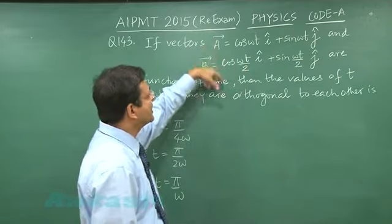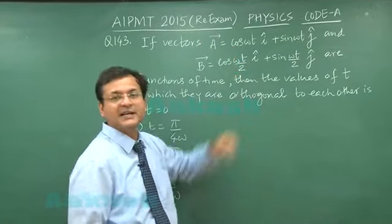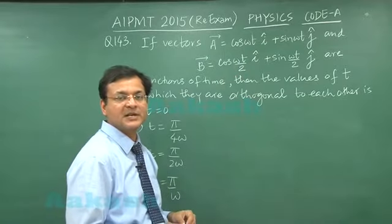Right now, let us suppose you are applying the dot product formula. This will be cos omega t cos a into cos b plus sin a into sin b. So that is cos a minus b.